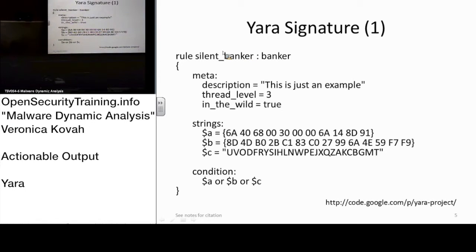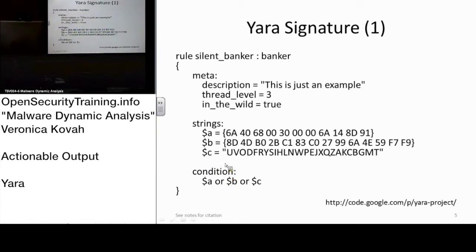The rule body starts with curly brackets. The metadata section is optional. The strings and conditions sections, I think, are both mandatory — they should be there. Any questions about YARA?